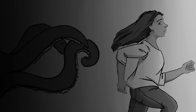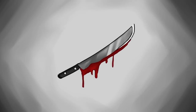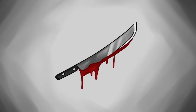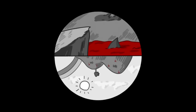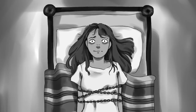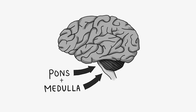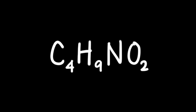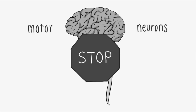It is during REM sleep, however, when our most vivid dreams occur. To prevent you from hurting yourself or others during your happiest dreams or your worst nightmares, your brain temporarily paralyzes you. Using the pons and the ventromedial medulla, our brain sends out the neurotransmitters GABA and glycine to inhibit motor neurons in the spinal cord, stopping any movement.